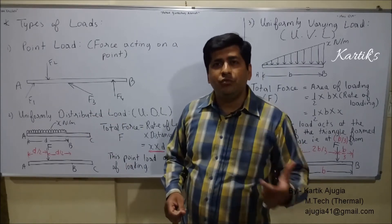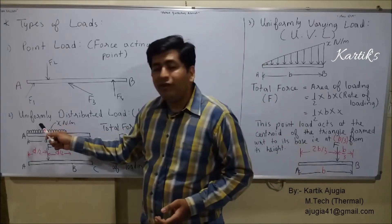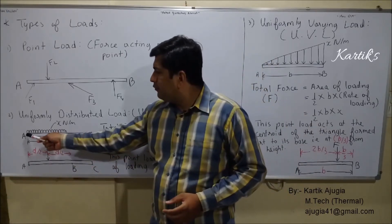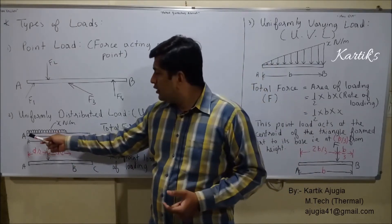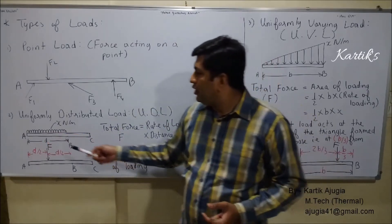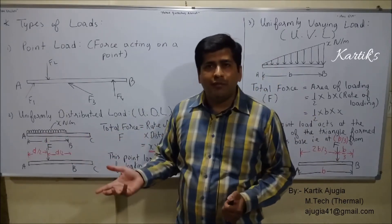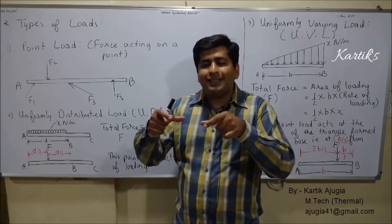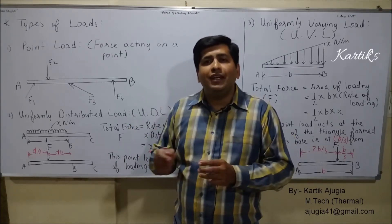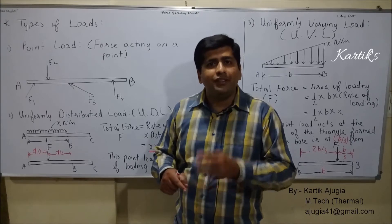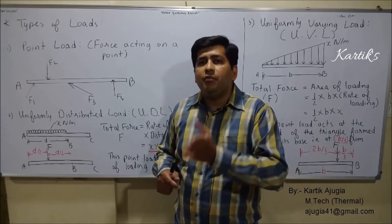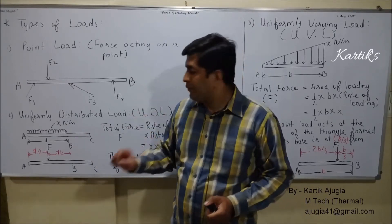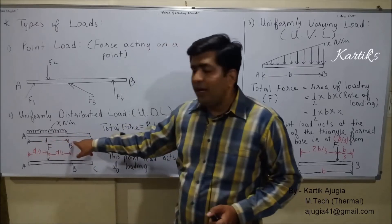Coming to the next load — the uniformly distributed load (UDL). As the name suggests, the load is uniformly distributed over the length of the body. Consider cement bags placed along the length of this body. Each cement bag weighs 50 kg, so 50 into 10 equals 500 Newton. If two bags are in one meter, the total weight is 500 into 2, that is 1000 Newton per meter.